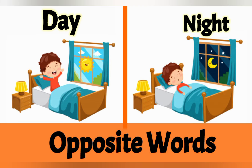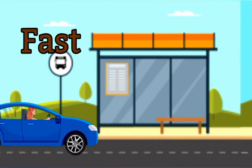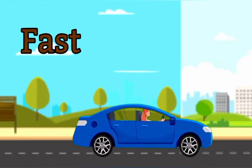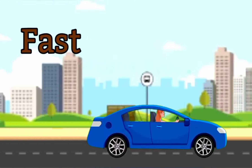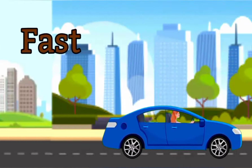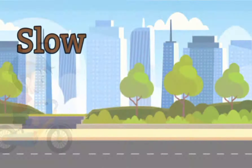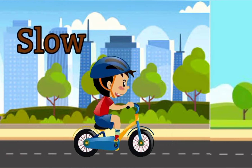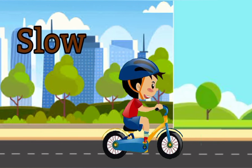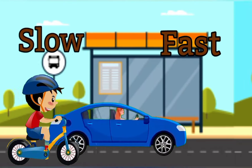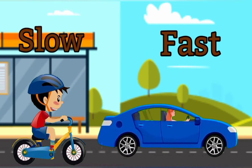Opposite words. The car is fast. The bicycle is slow. Fast and slow.